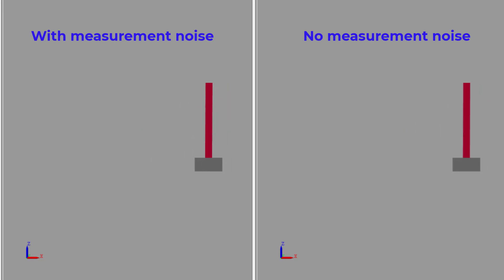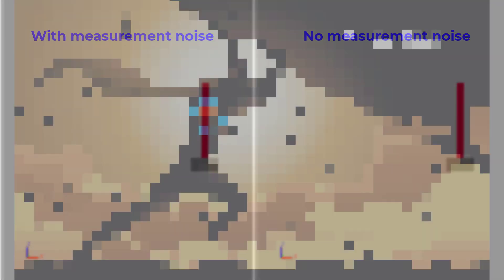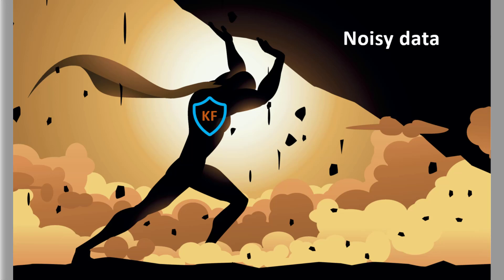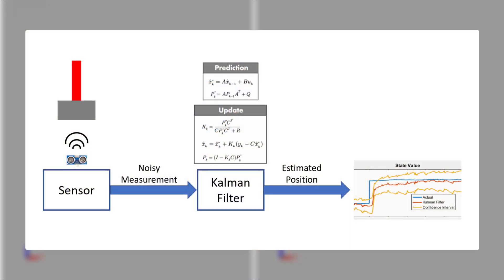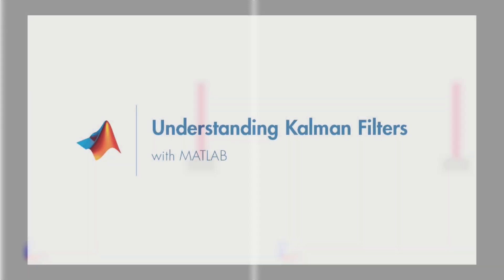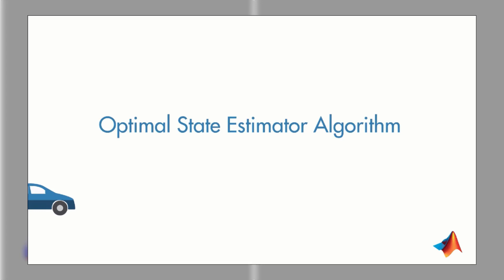This is where the Kalman filter comes in to save the day. The Kalman filter will be used to estimate the position of our system by filtering out the noise. I won't go into depth into how the algorithm works, but if you're interested, be sure to check out this video series on Kalman filters. My colleague Melda does a fantastic job of explaining the topic.